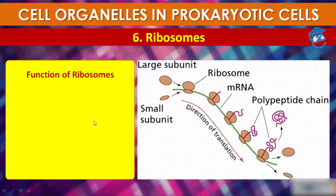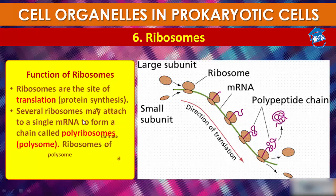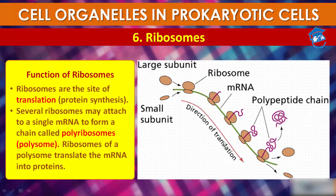The function of ribosomes is protein synthesis — they are the site of translation. A polyribosome has two units of ribosome: 50S and 30S. These come together and attach to mRNA, helping in translation (protein synthesis). The polypeptide chain — which means protein — comes out from the ribosome.